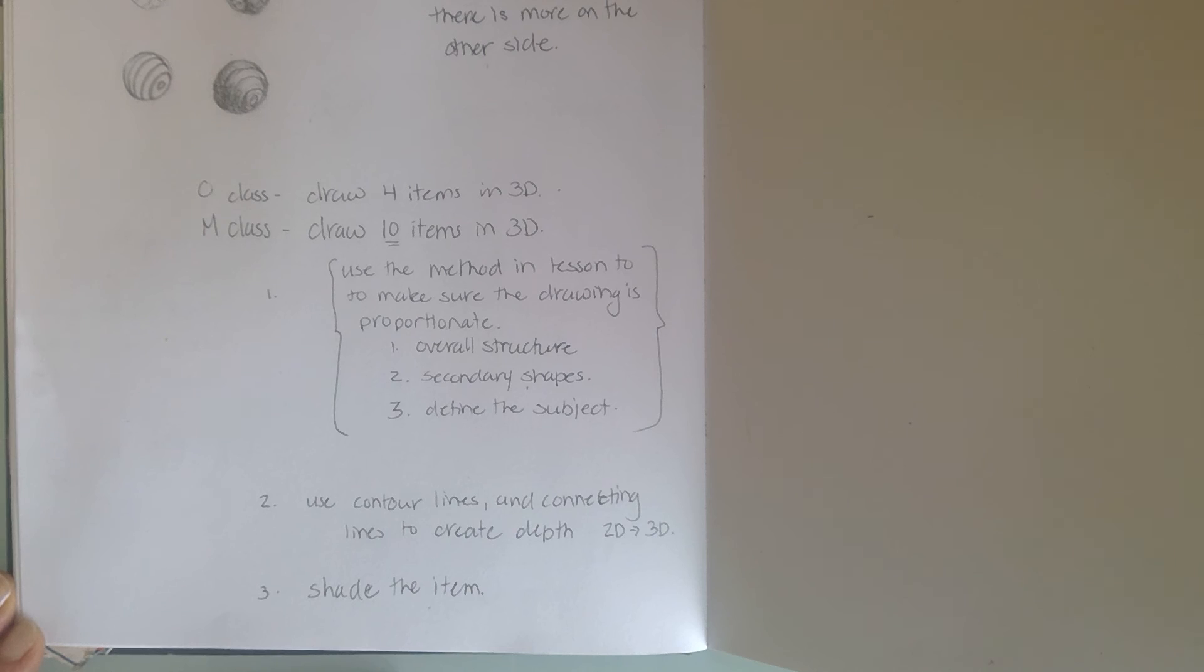If you're drawing an irregular shape like the ball up at the top here, then you're going to use cross contour lines to do that. And then number three: shade the item.